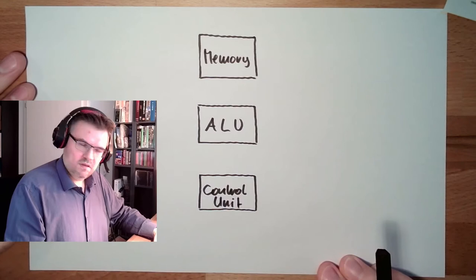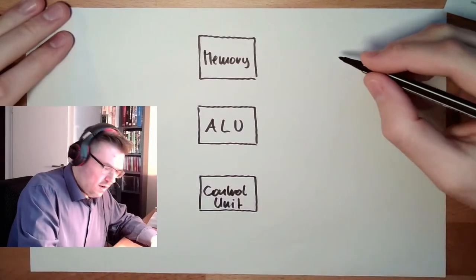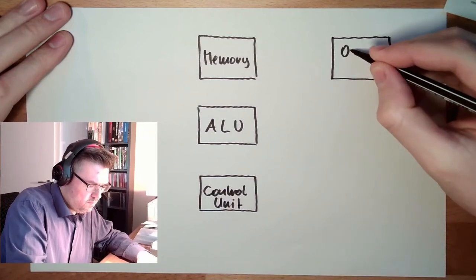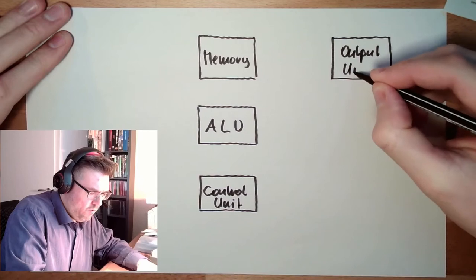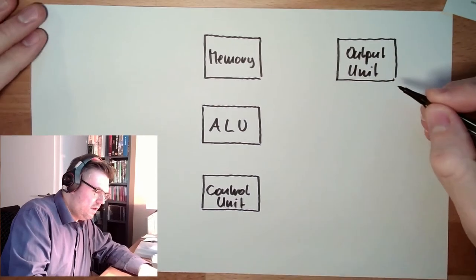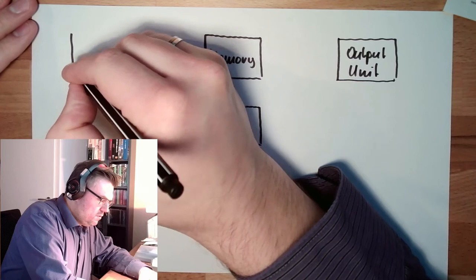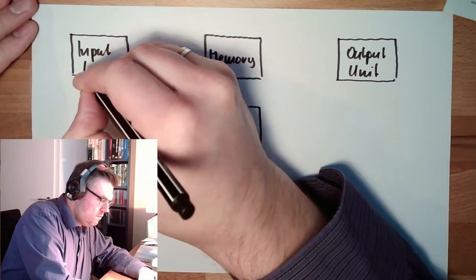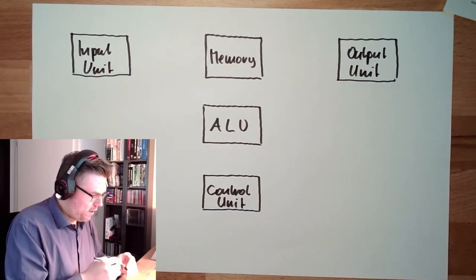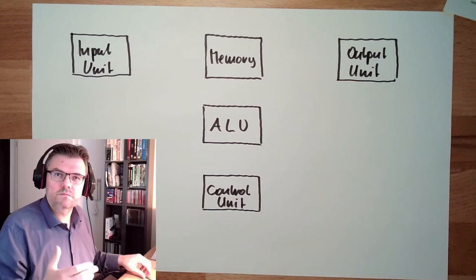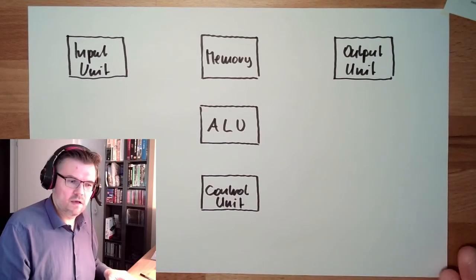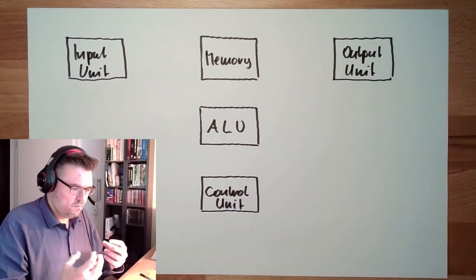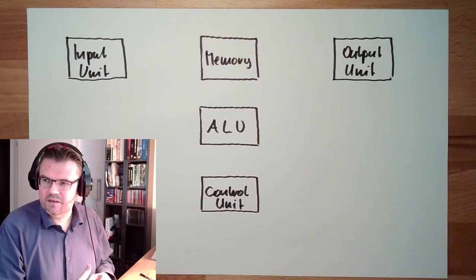And I mean it would work, but somehow I need to get data into the memory and I need to get results out of it. So there are also output I/O units. There's an output unit, however this looks like, and there is an input unit. So these are the parts, how a von Neumann architecture looks like. And now we have to look how they are communicating to each other, how they are interacting.